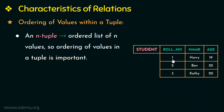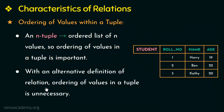That is, the first value has to be the role number of the student, the second value has to be the student name, and the third value has to be the age of the student. I cannot interchange the values within a tuple. So ordering of values in a tuple is important with this definition where an n-tuple is an ordered list of n values. With an alternative definition of relation, the ordering of values in a tuple is unnecessary, and let us see why.